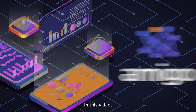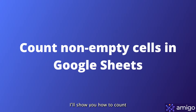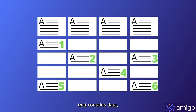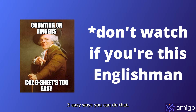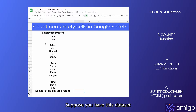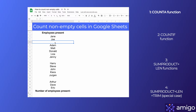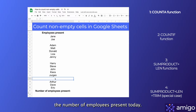In this video, I'll show you how to count non-empty cells in Google Sheets. When working with Google Sheets, occasionally we might want to find the number of cells that contain data — in other words, non-empty cells. We'll cover three easy ways you can do that. Suppose you have a dataset of only the employees who are present today, and any empty cell indicates an absentee, and we need to calculate the number of employees present today.